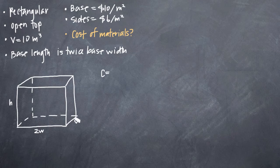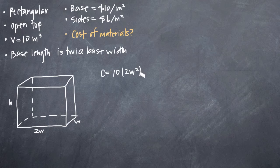We know that the area of the base is 2w times w, which is 2w squared. And we know that the cost of the materials for the base is 10. So we can say that the cost is 10 times 2w squared. And that takes care of the base.